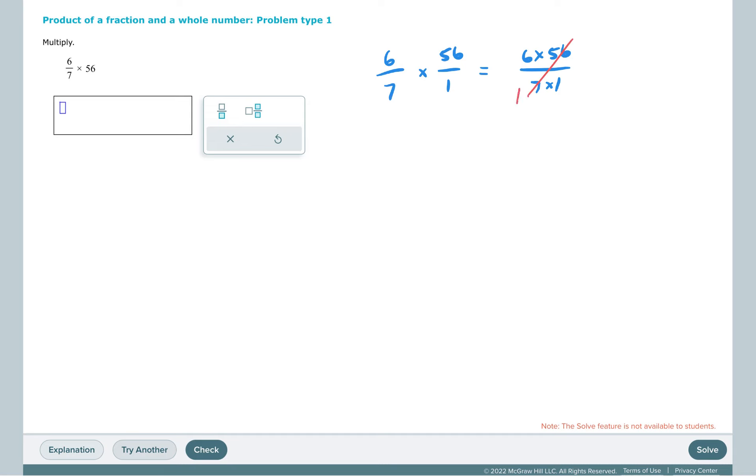7 goes into 56 eight times, and it goes into itself one time. 6 times 8 is 48, and we have 48 over 1, so our answer is 48.